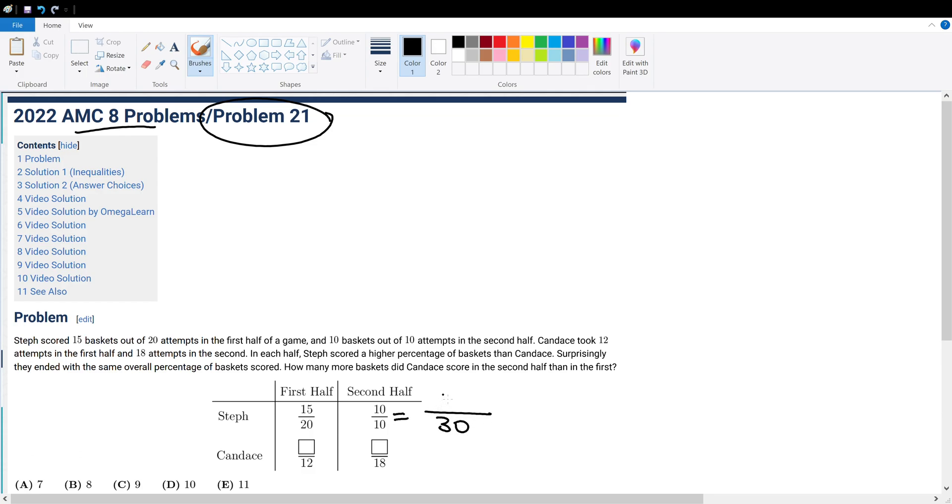So Steph made a total of 30 shots and landed 25. Candice made a total of 30 shots and she is going to land a total of 25 shots as well since they both have the same overall percentage at the end.